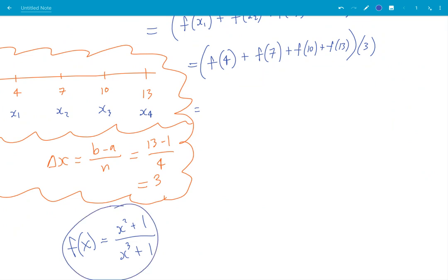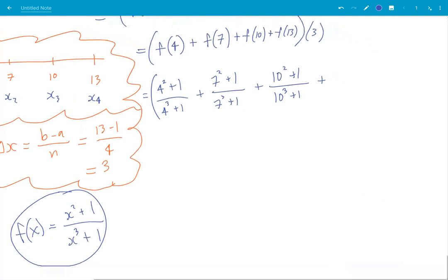So now I can fill in all my numbers. I get 4 squared plus 1 all over 4 cubed plus 1, plus 7 squared plus 1 all over 7 cubed plus 1, plus 10 squared plus 1 all over 10 cubed plus 1, plus 13 squared plus 1 all over 13 cubed plus 1, all this times 3.